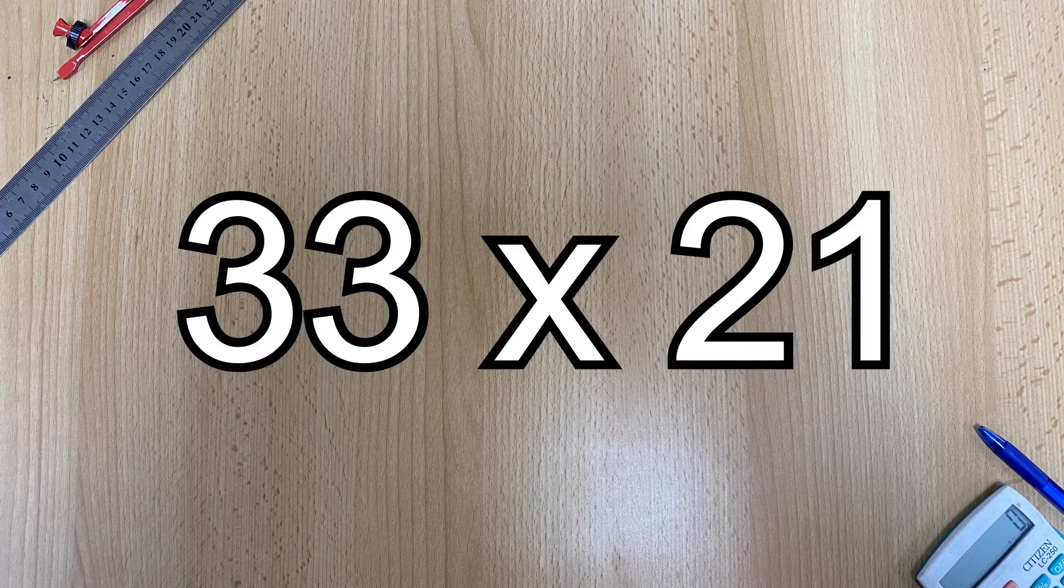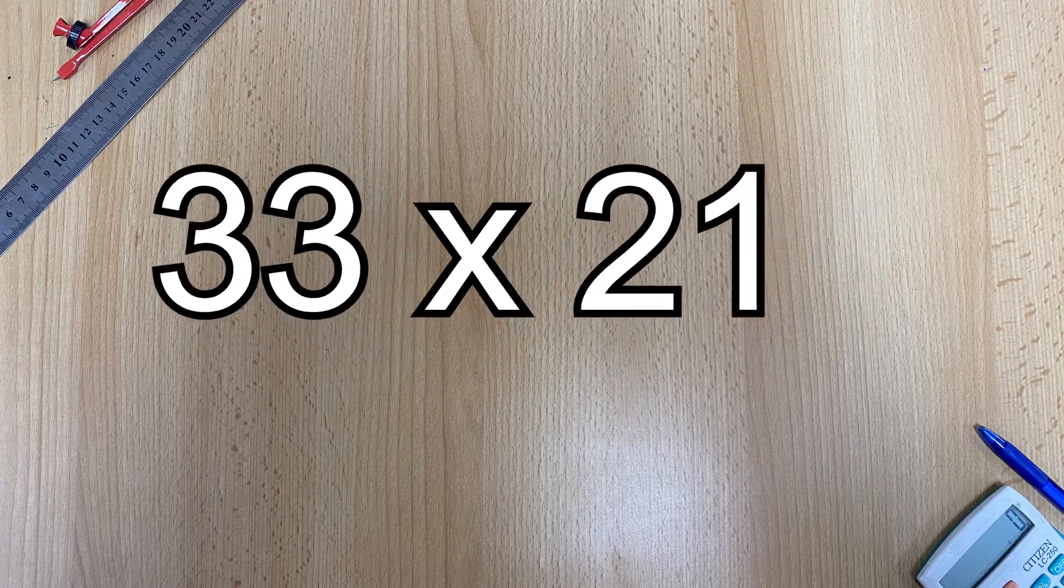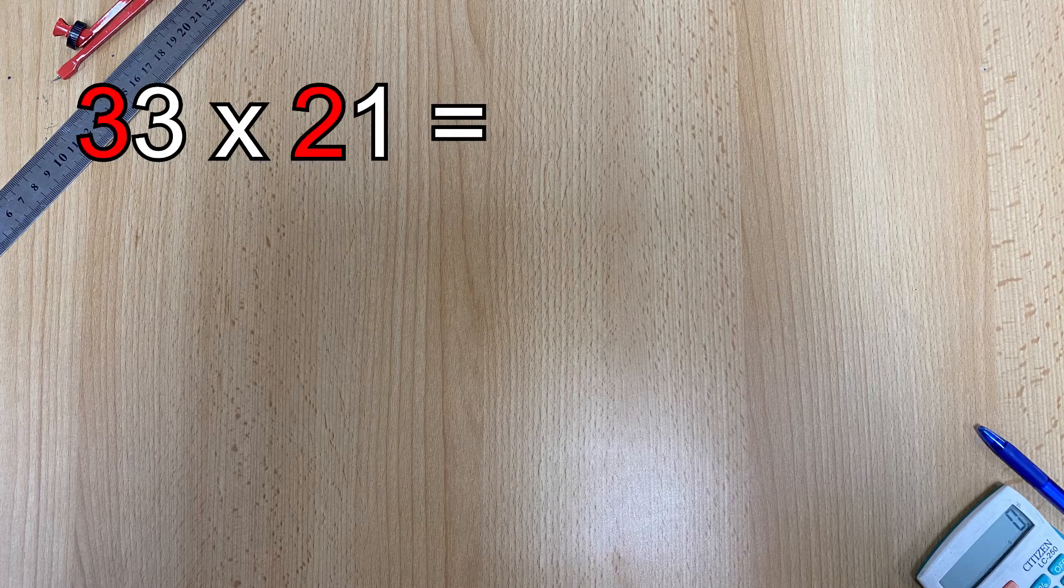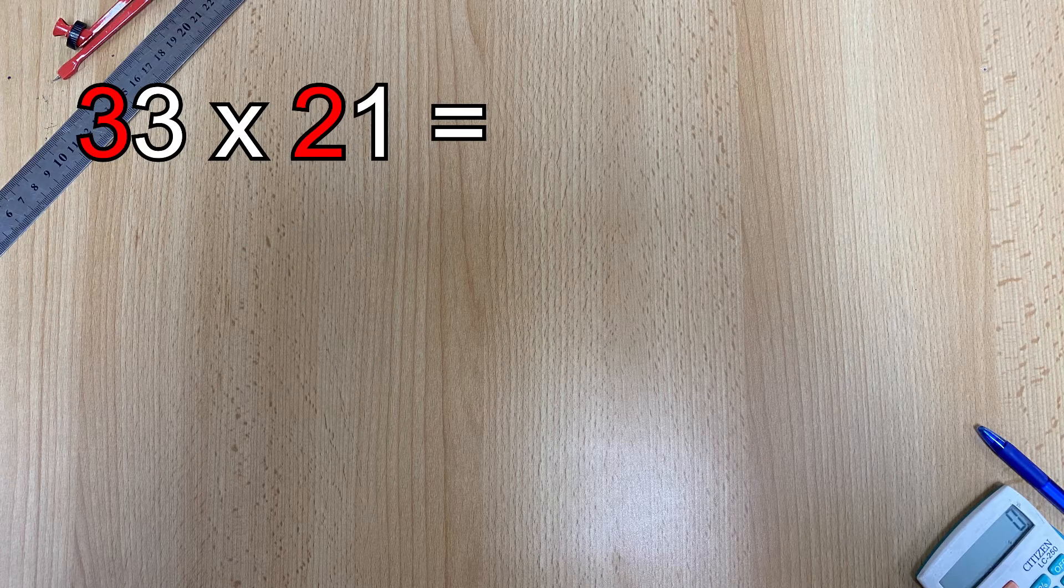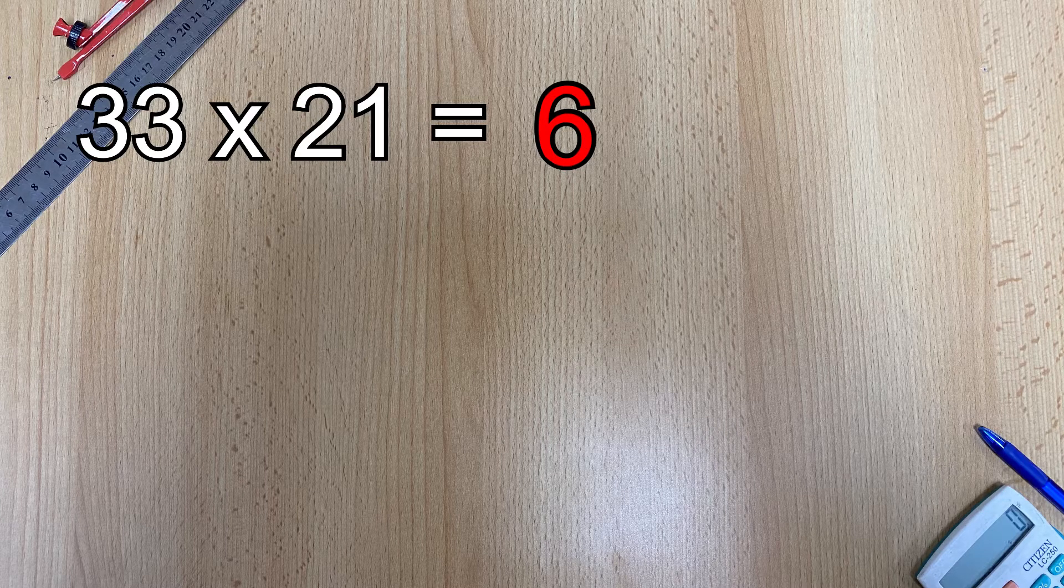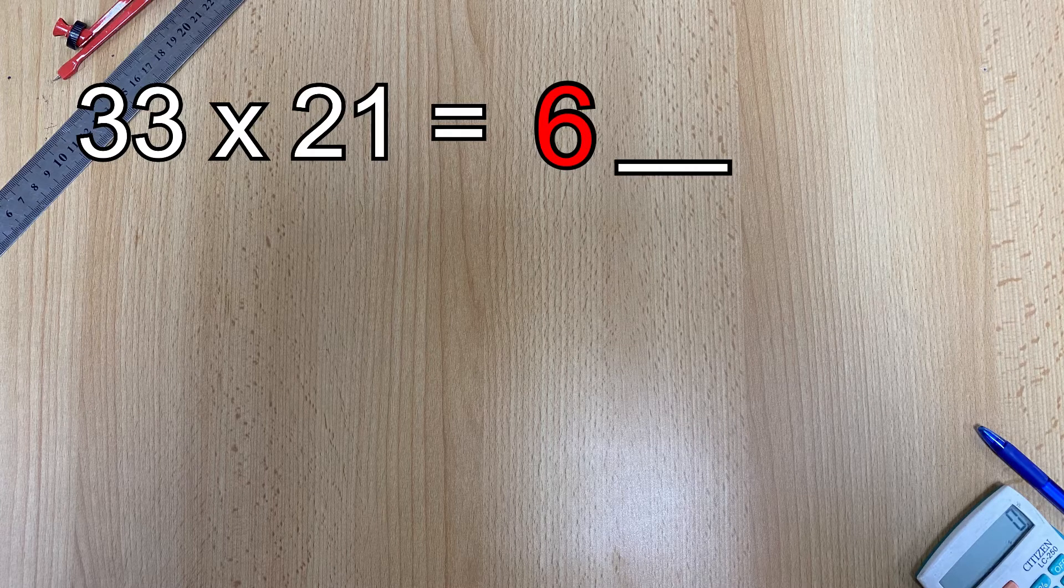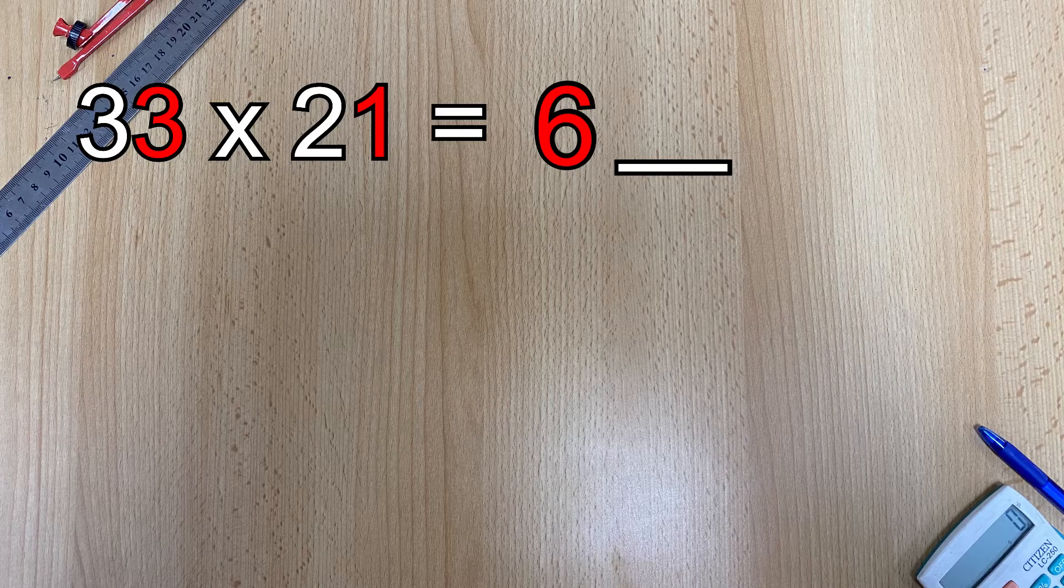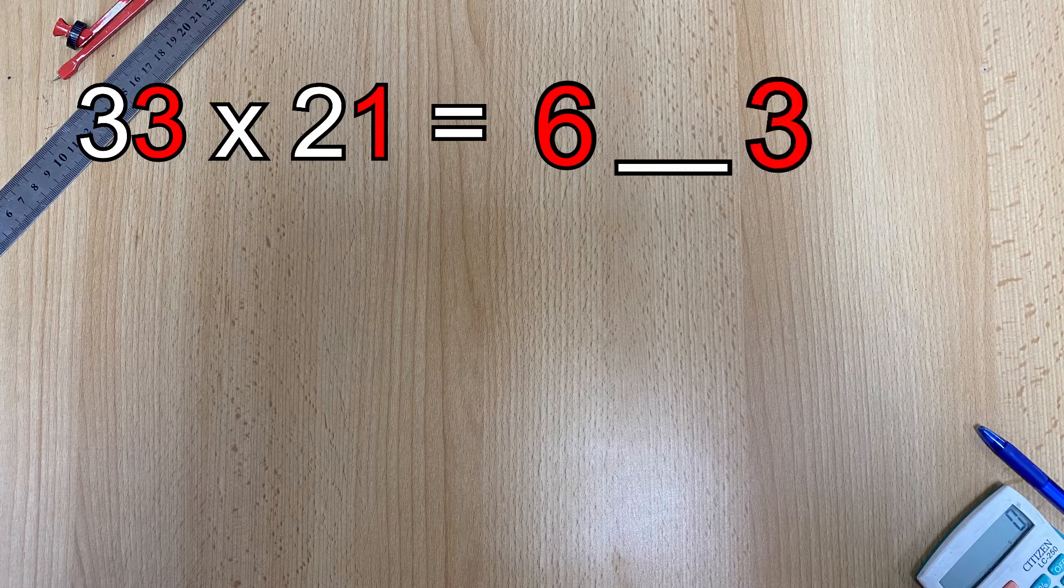Let's take the example 33 multiplied by 21. First you multiply both digits in the tens column and leave the answer on the left. Then you leave a blank space. Then you need to multiply the two numbers in the units column and write the number on the right hand side.